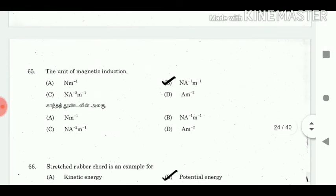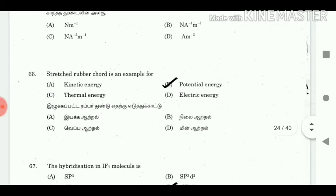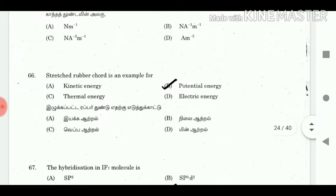65. The unit of magnetic induction? Answer: NA⁻¹M⁻¹. 66. A stretched rubber band is an example of? Answer: Potential energy.